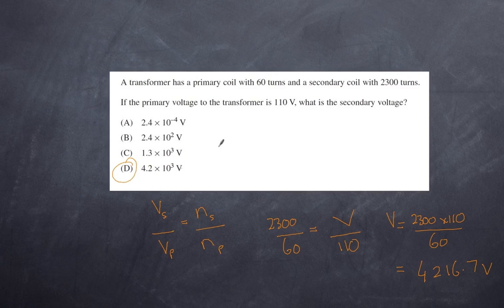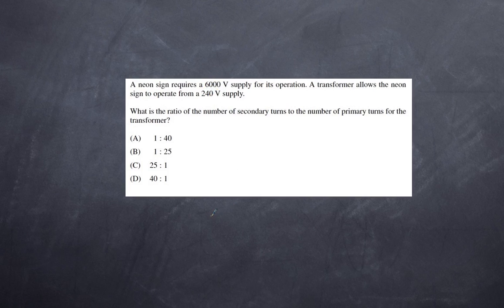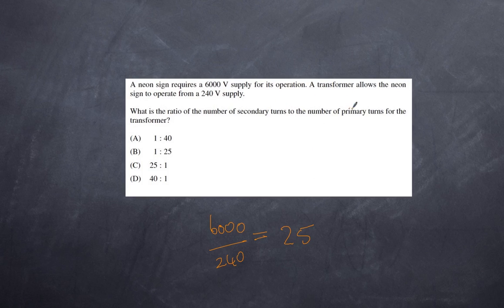Next question: a neon sign requires a 6000 volt supply, and a transformer allows it to operate from a 240 volt supply. What is the ratio of secondary turns to primary turns? The voltage ratio equals the turns ratio, so: 6000 over 240 equals 25. The ratio of secondary to primary is 25 to 1. The answer is C.